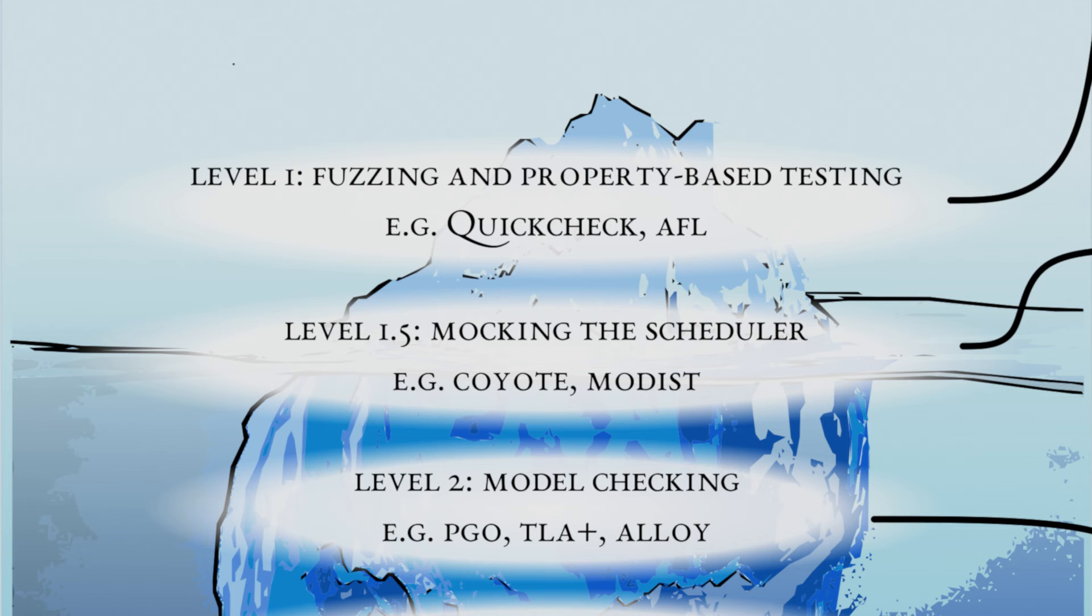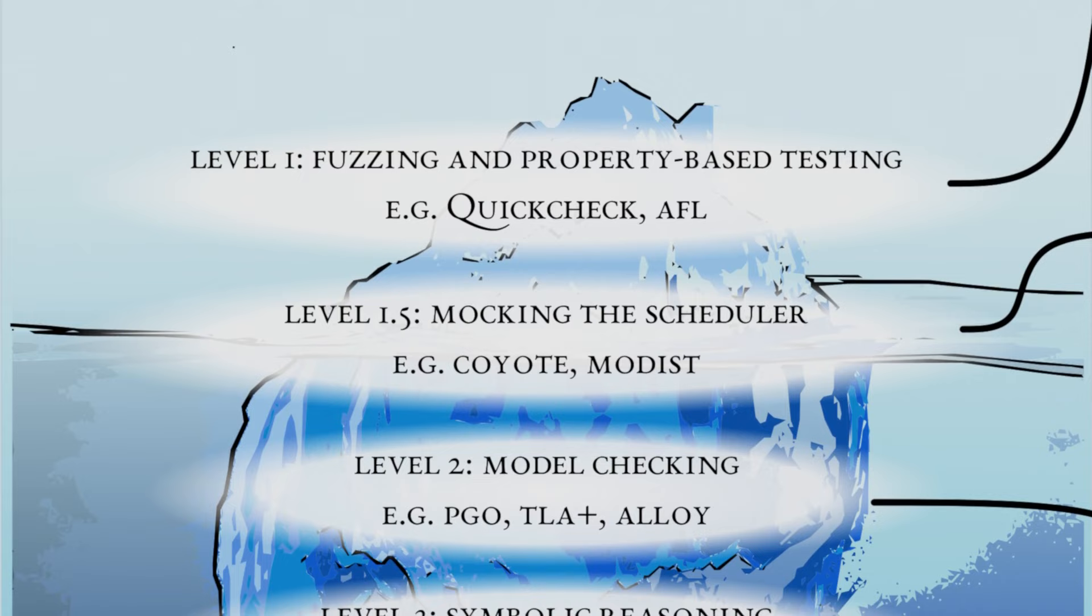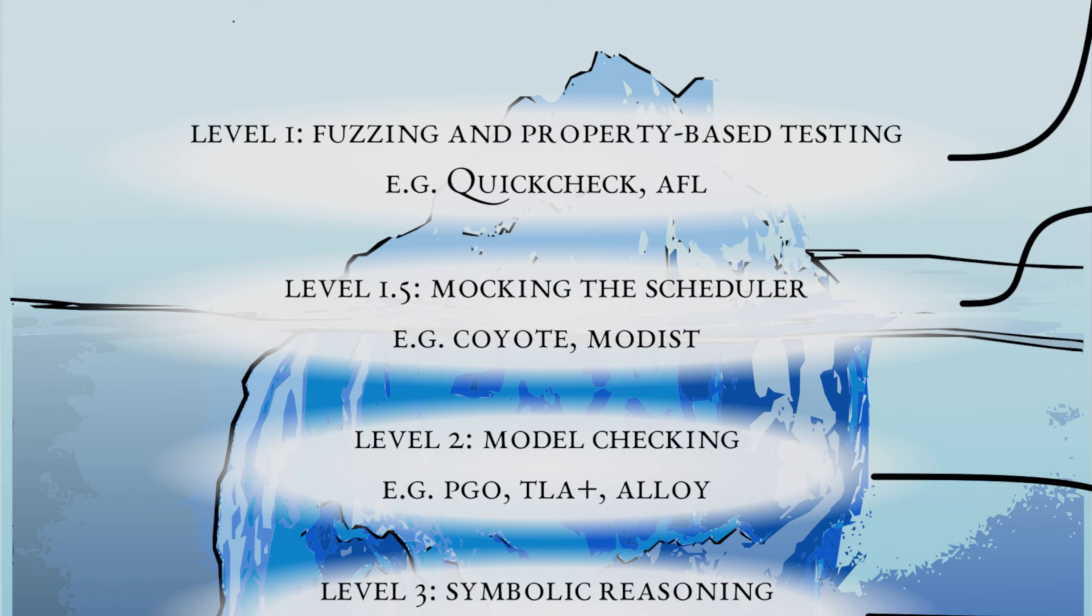But, as I step down into level 1.5, yes, I made fractional levels, you might begin to wonder, okay, that works on functions, single, pure functions that don't have side effects. But how do I do this on my distributed system? It's huge. It has threads and stuff. And the answer is basically, you mock out the scheduler.